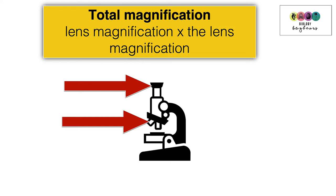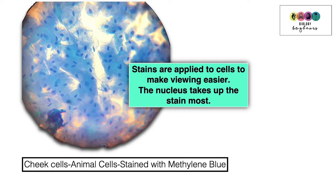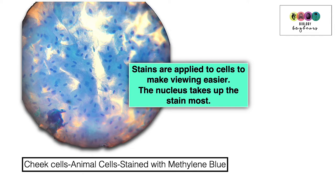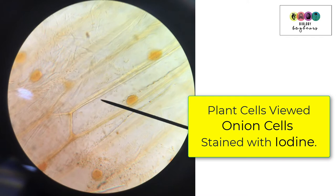When looking at stains under the microscope, it's important to get a good detailed picture. Stains are applied to cells to make viewing easier. The nucleus takes up most of the stain, and the cytoplasm gets stained too but not as darkly. This is a picture of cheek cells — animal cells — stained with methylene blue.